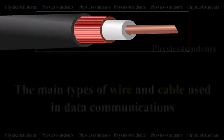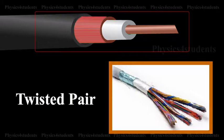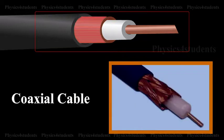The main types of wire and cable used in data communications are twisted pair, multi-conductor flat cable, and coaxial cable.